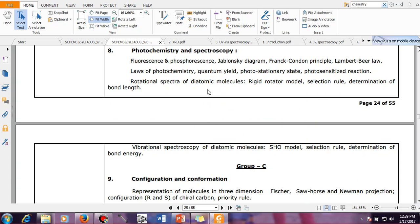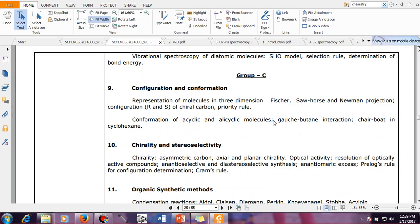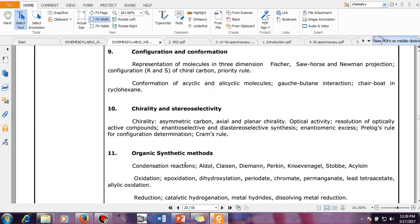Then you have photochemistry and spectroscopy. Spectroscopy you need to study properly because so many things you have from spectroscopy. Then you have another group, that is Group C: configuration and conformation, that means isomers. I'll make good videos on isomers so that things become clear and you can write things properly. Then you have chirality, stereoselectivity, organic synthetic methods.